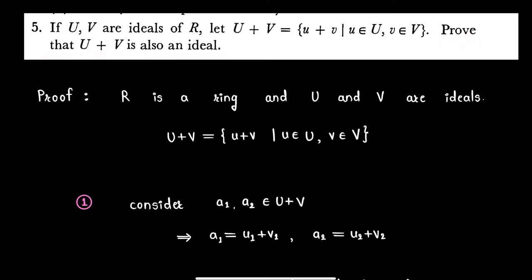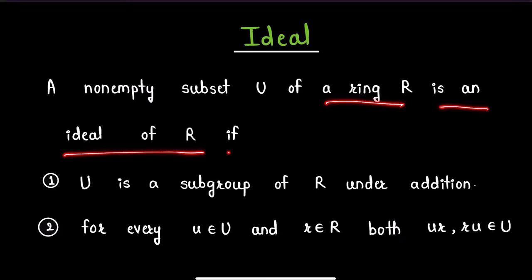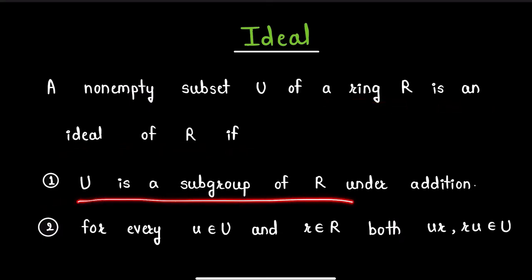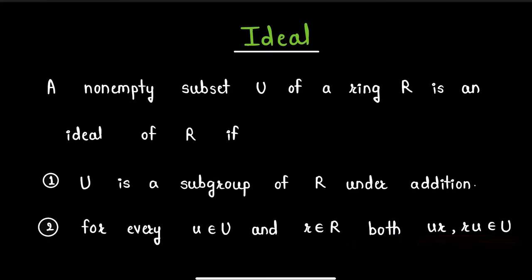Before starting our proof, we will recall the definition of an ideal of a ring. A non-empty subset U of ring R is an ideal of ring R if: number one, U is a subgroup of R under addition, and number two, for every element u from ideal U and for every element r from ring R, both u·r and r·u are elements of set U.